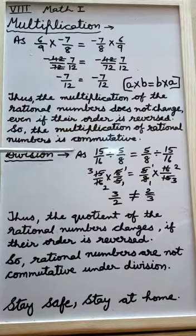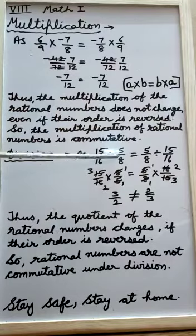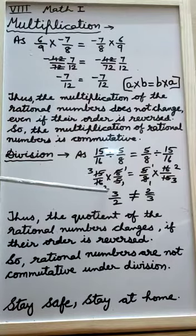In division, as 15 upon 16 is divided by 5 upon 8 gives us answer 3 upon 2.